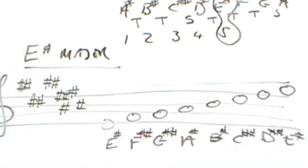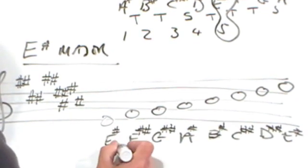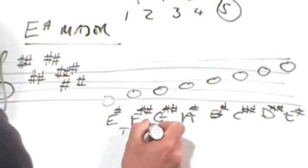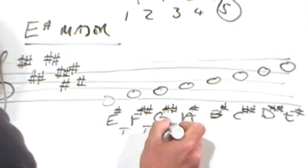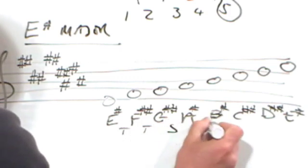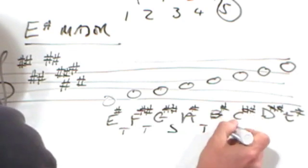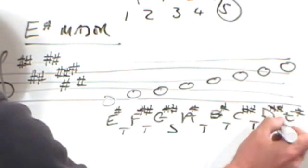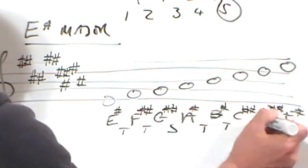So there we go, and let's check it out. E sharp to F double sharp, it's a tone. F double sharp to D double sharp tone. D double sharp to A sharp, semitone. A sharp to B sharp, tone. B sharp, C double sharp, tone. C double sharp to D double sharp, tone. D double sharp to E sharp, semitone.